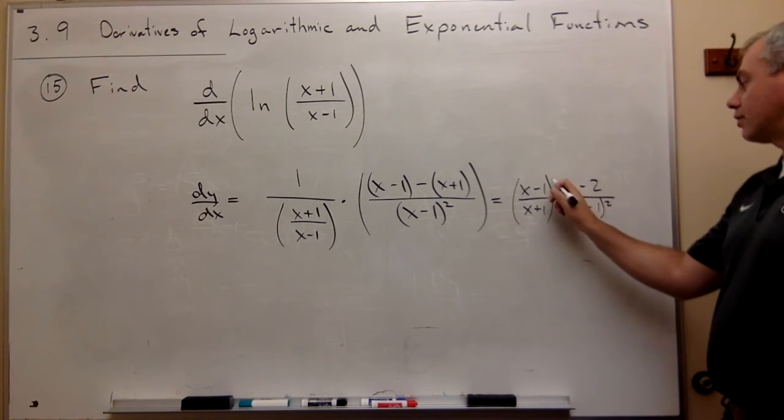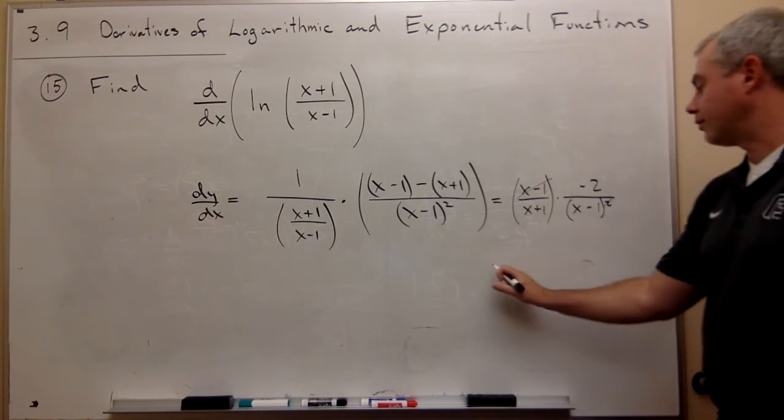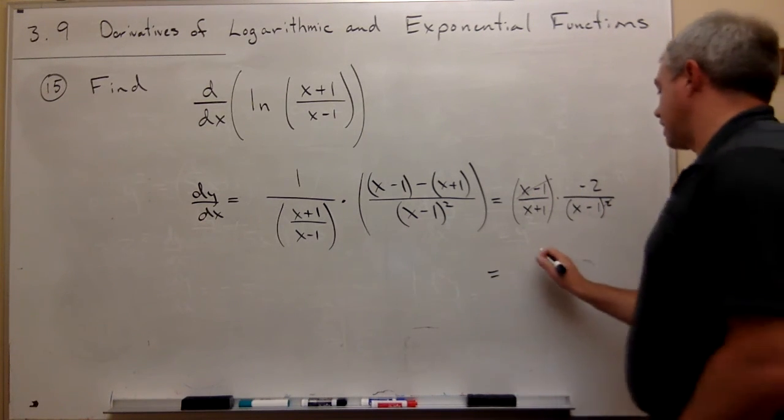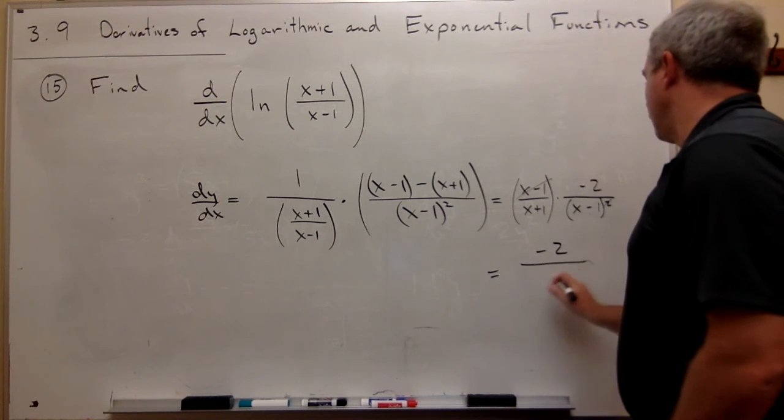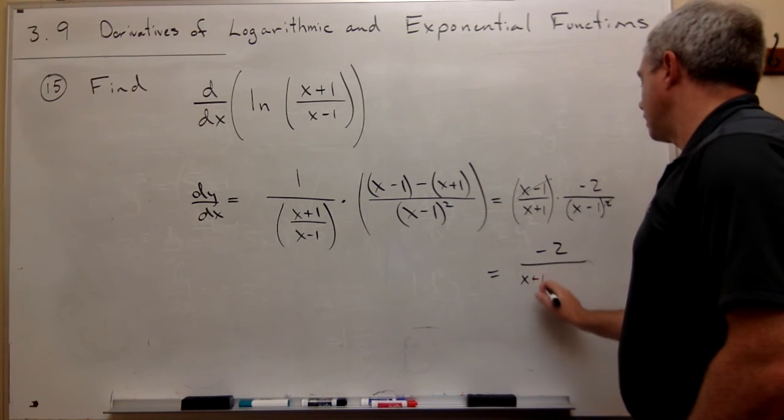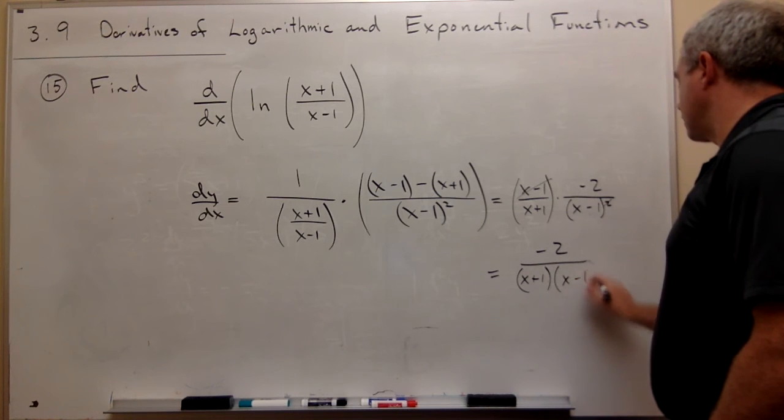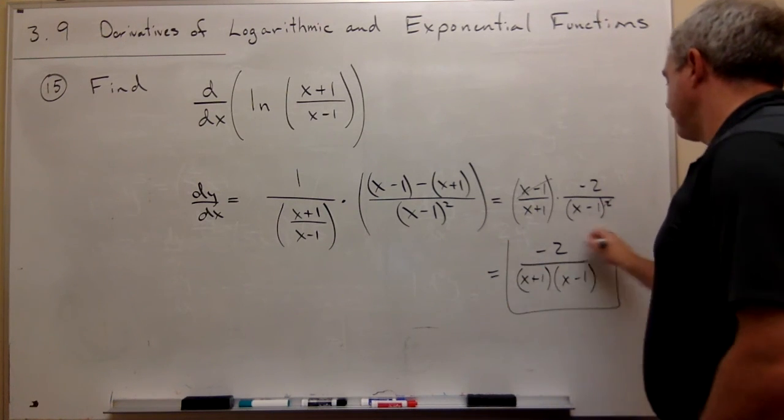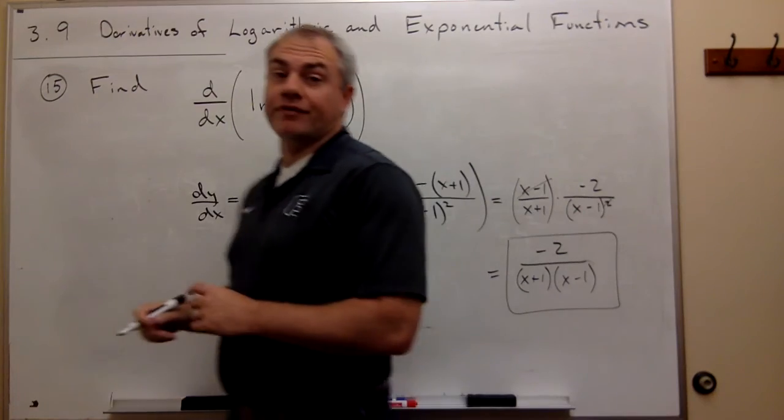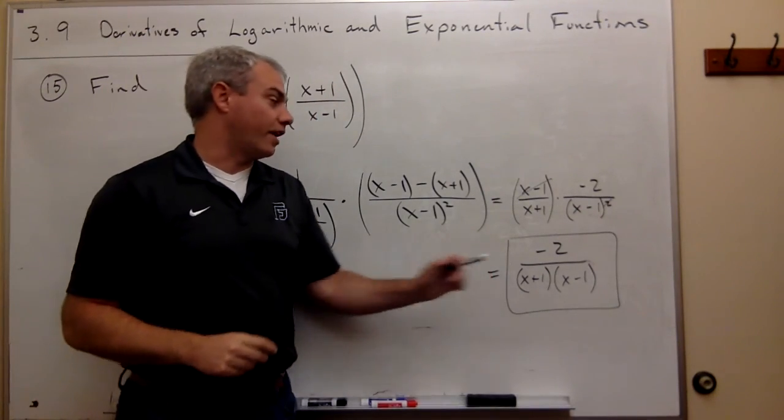Then I could cancel an (x-1) on top and bottom, and we could just write this as -2 over (x+1) times (x-1). So that would be my derivative in a simplified form.